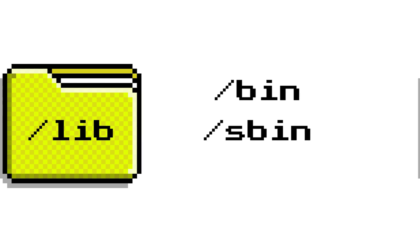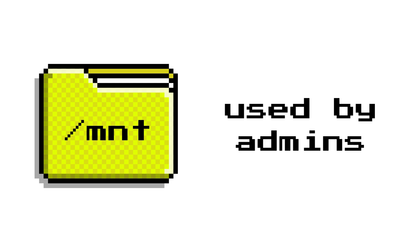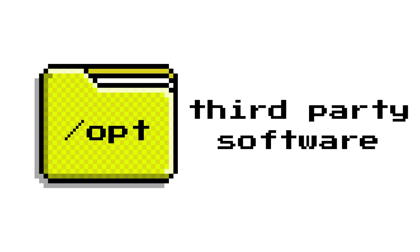Slash lib contains shared libraries that programs in slash bin and slash sbin depend on. Slash media is where external drives, like USBs or DVDs, usually get auto-mounted. Slash mnt is also for mounting, but it's mostly used by admins when manually mounting drives. Slash opt is reserved for optional or third-party software that doesn't come with the system.